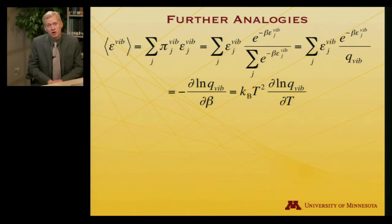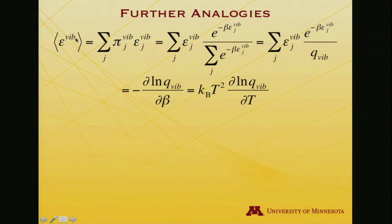Furthermore, we can make all the analogies for the thermodynamic state functions that we had made previously. Thus, for instance, the expectation value of the vibrational energy will be the probability-averaged accessible energies, and that'll be minus the partial derivative of the log of the partition function, now indexed with a subscript, that it's the vibrational partition function we're talking about, with respect to beta. And if you'd rather work with temperature instead of beta, then it's kT squared partial log q partial T.